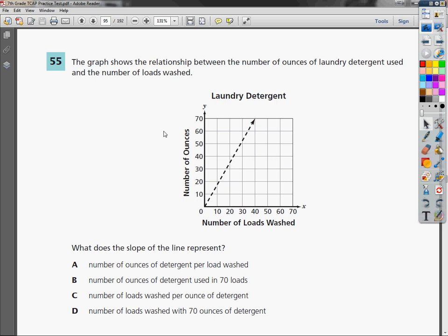TCAP practice test for grade 7. This is question number 55 of the math section. The graph shows the relationship between the number of ounces of laundry detergent used and the number of loads washed. What does the slope represent?